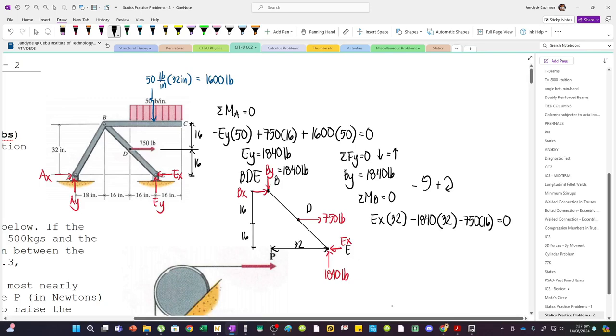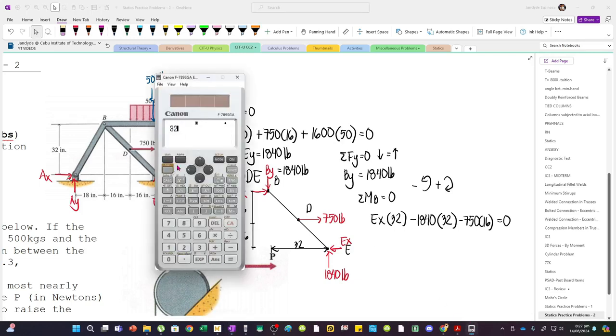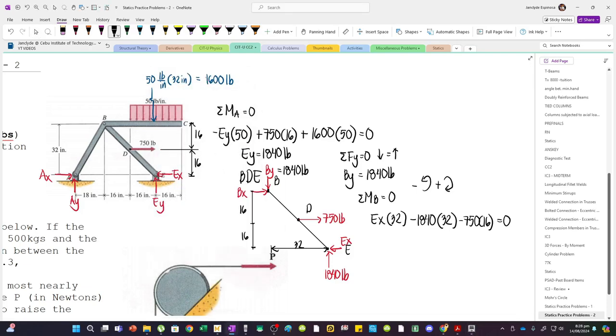Set to 0. We can solve for EX. So, 32EX minus 1840 times 32 minus 750 times 16. Set to 0. This is 2215. So, EX equals 2215 pounds.